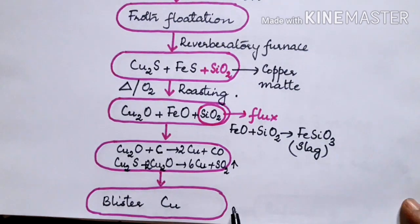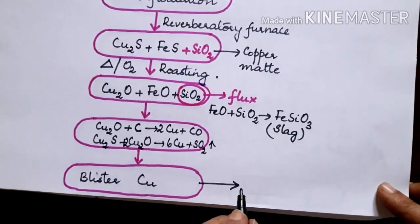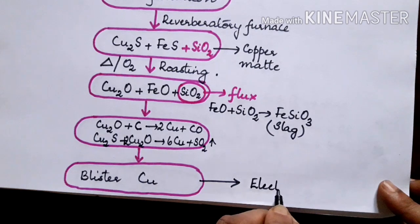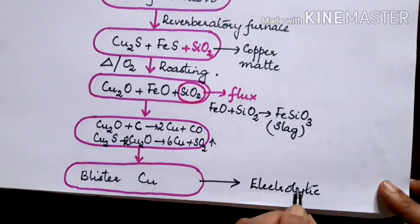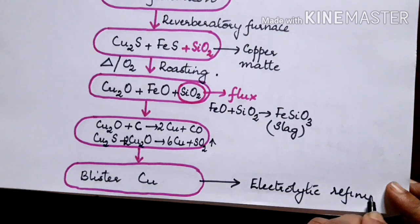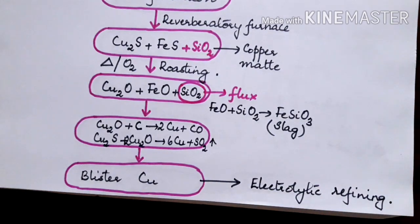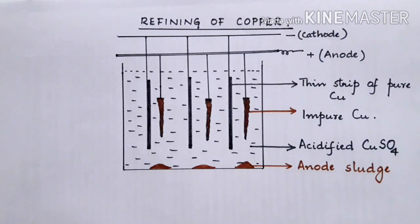This blistered copper is further undergoing what is called electrolytic refining. The final product formed in the Bessemer converter is blistered copper that can be considered as impure copper. This impure copper may contain some impurities. So then we have to do the refining or purification of the impure copper and this is ensured by doing what is called electrolytic refining.